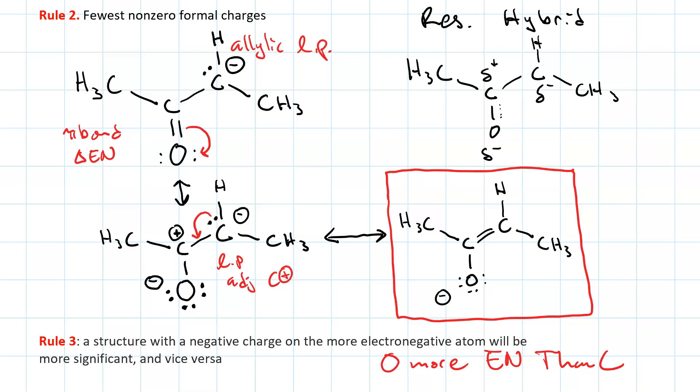Moreover, there's a partial pi bond between the carbon and the oxygen, and a partial pi bond between the carbon and the carbon. Now, the most important features of this hybrid are the partial negative on the oxygen, and the partial pi bond between the two carbons.